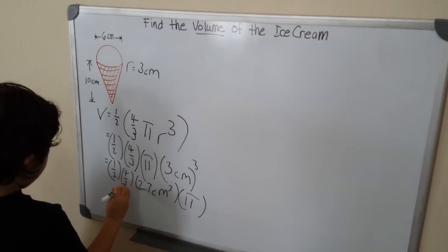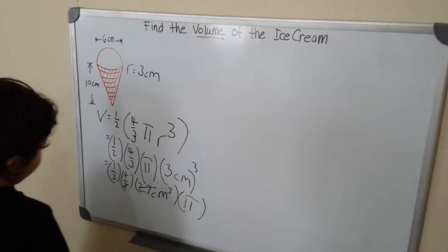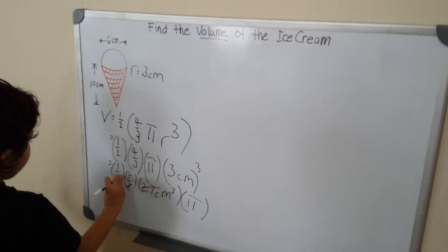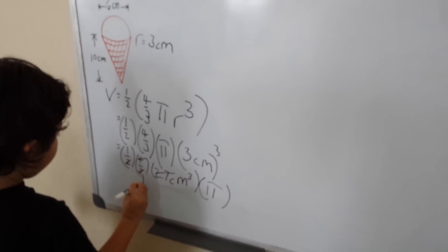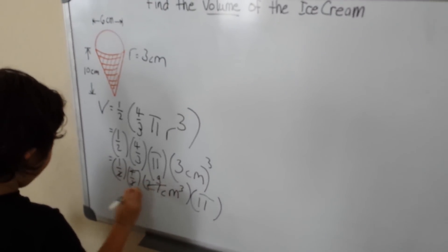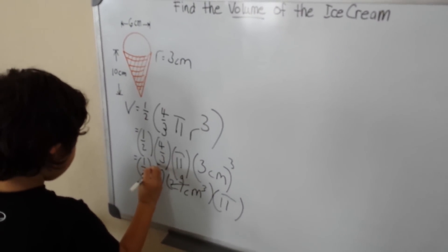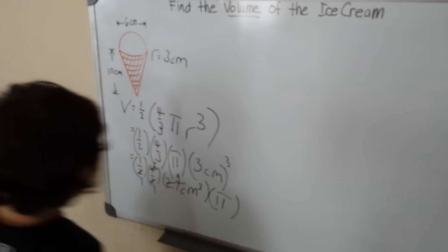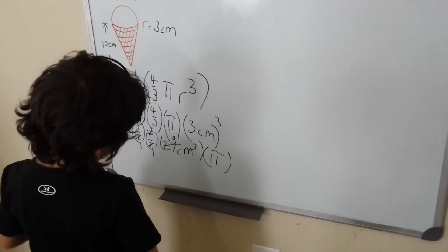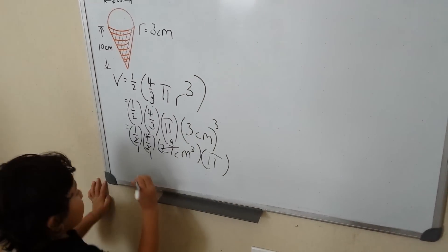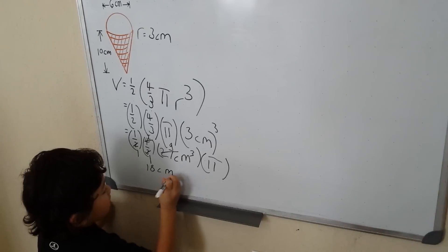Now we cross-cancel. 3 and 27 of course — and how about 2 and 4? So 3 changes into 1 and 27 changes into 9. 2 changes to 1 and 4 changes into 2. So 1 times 2 is 2, times 9 is 18 centimeters cubed.